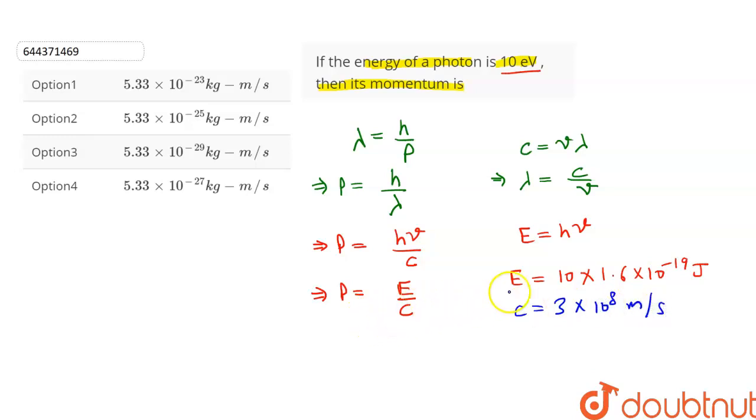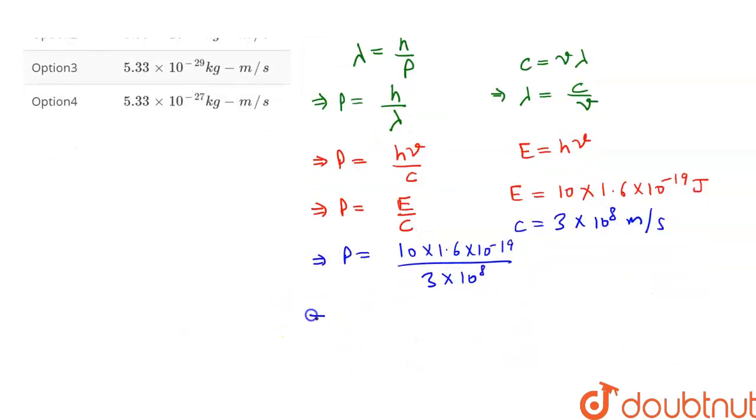Let's substitute the value of E and C in this equation. This will give us P is equal to 10 into 1.6 into 10 raised to the power minus 19 divided by 3 into 10 raised to the power 8. And after simplifying this equation, we get P is equal to 5.33 into 10 raised to the power minus 27 kg meters per second.